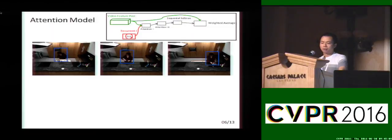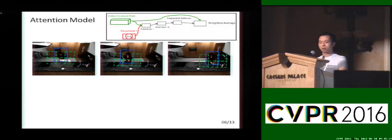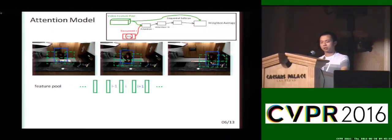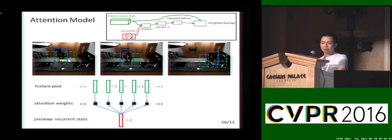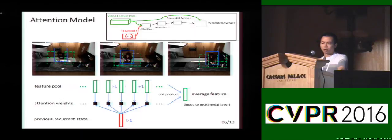Our attention model serves spatial and temporal attention simultaneously. Suppose we have several frames — we first use optical flow to roughly detect the person in the video, indicated by the blue bounding boxes. Then we crop several small regions around the lower half of the person box and extract appearance features for each small region, making each region a candidate for the interesting object we are looking for. We compute attention weights by combining the feature pool and the previous recurrent state, then do a dot product to get the average feature input to the multi-modal layer.